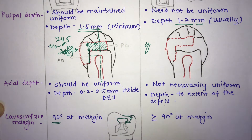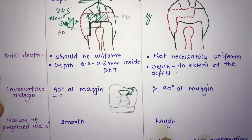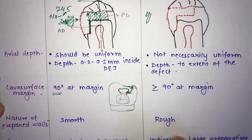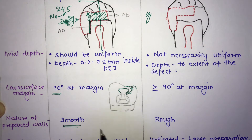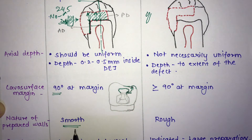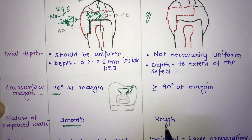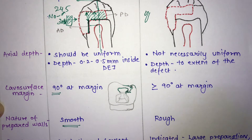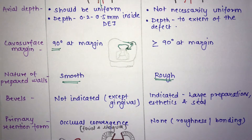The next difference is the nature of the prepared wall. In amalgam, the prepared walls are smooth because all walls are kept uniform. In composite, the walls are rough because you are simply removing whatever caries is present.